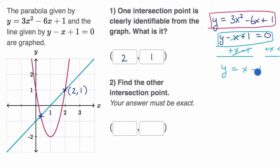And so now, we can substitute x minus one back in for y. And so we get x minus one is equal to three x squared minus six x plus one.